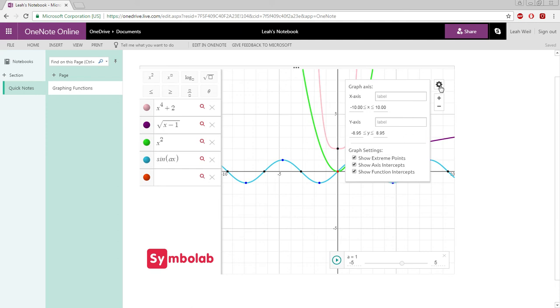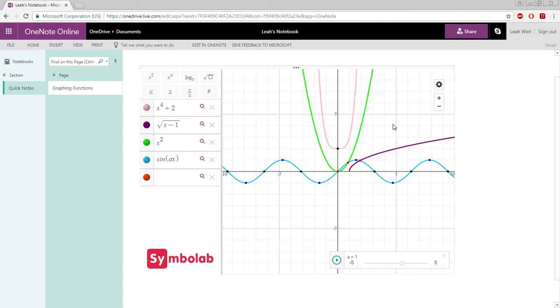To get out of the settings, just click the Settings icon again. As you can see, there are some colored points.